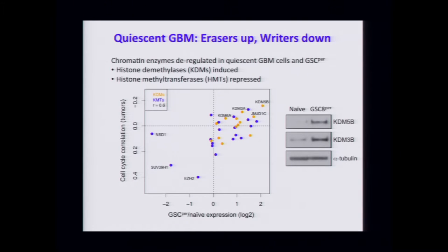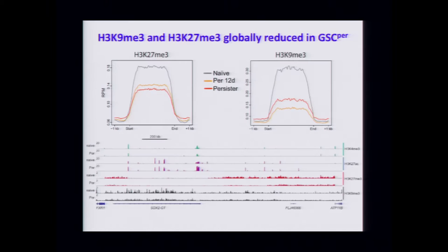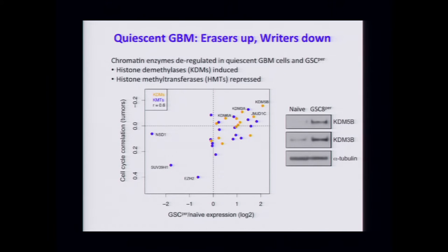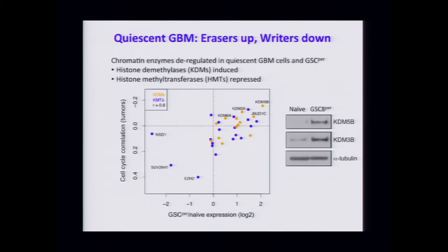We were struck that this gene set is packed full of KDMs — lysine demethylases — genes encoding enzymes that remove methyl marks off histones. In contrast, the methyltransferases are actually down-regulated in these drug-tolerant cells. KDM5 in particular has been previously implicated in drug-tolerant cancer cells. We spent a while looking at KDM5, but it turns out it does not seem to be the critical player here — we can inhibit it, knock it down, or pharmacologically inhibit it, but the persister cells don't care and are not dependent on KDM5.